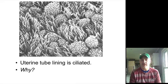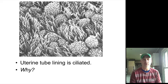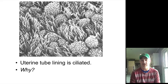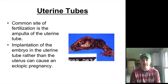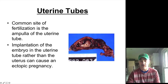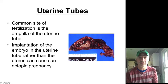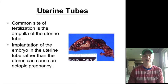An ectopic pregnancy is not viable. The embryo will develop for a short while but can cause serious problems, including uterine tube rupture, which can be dangerous to the mother. This image shows a tubal pregnancy. They can usually progress to about six to eight weeks before they are no longer viable.